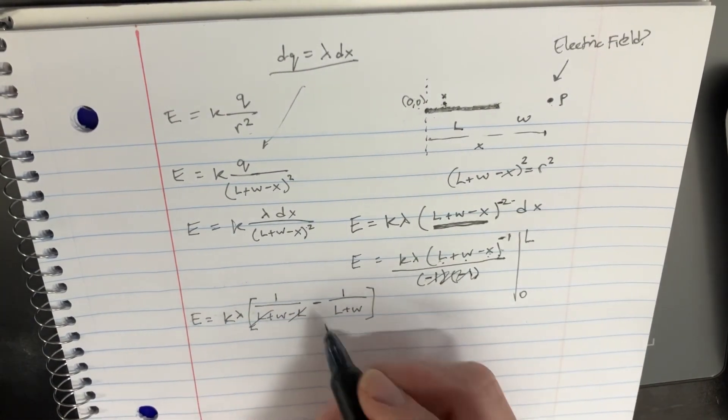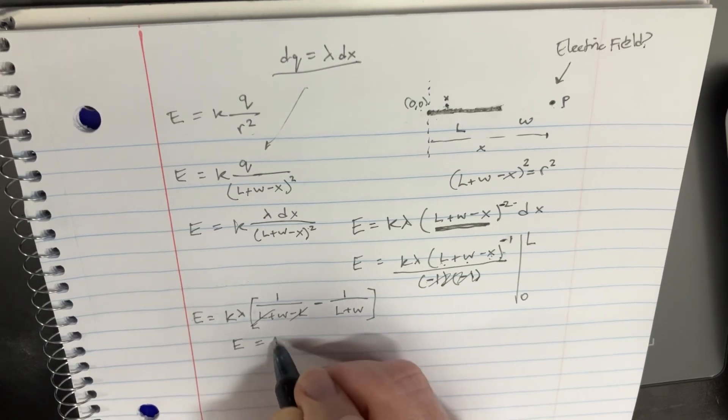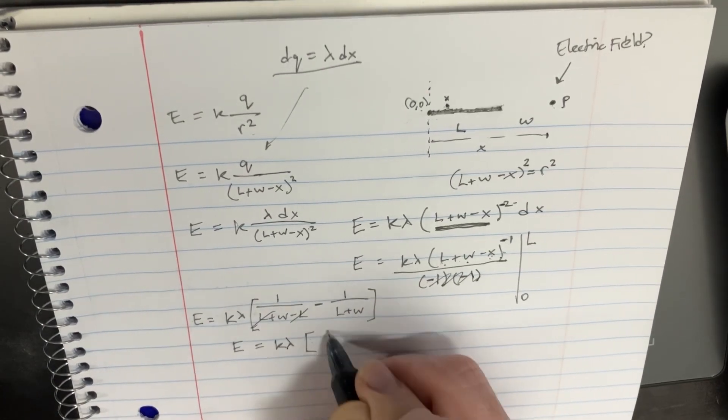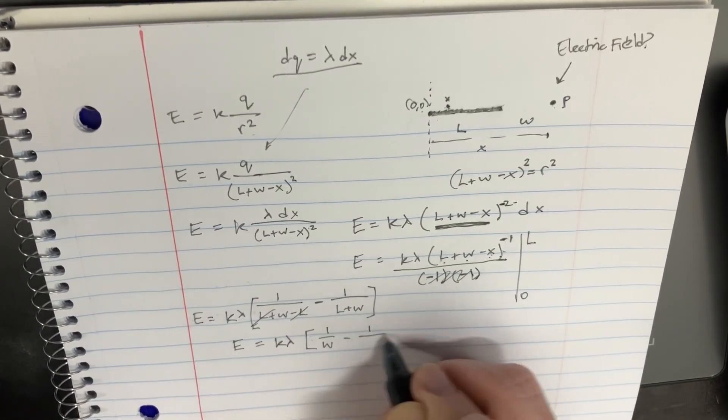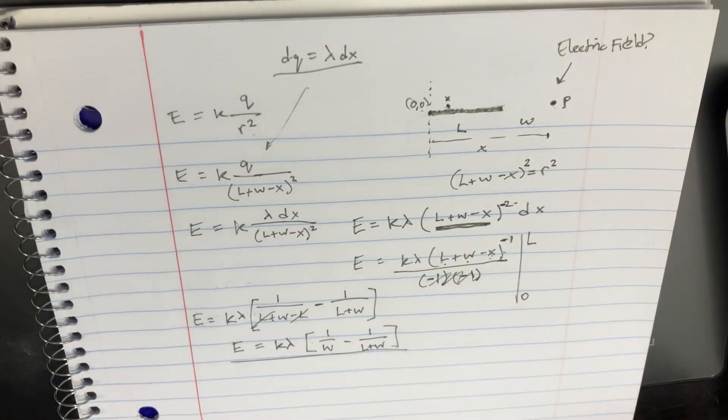And obviously this is just going to cancel out, and so the answer is just K lambda times 1 over W minus 1 over L plus W. And there you go. Nice and easy.